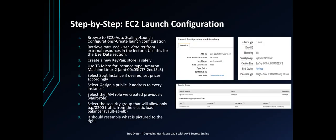Next we'll set up the launch configuration. Browse to EC2 Auto Scaling Launch Configurations and create a launch configuration. Retrieve the AWS EC2 user data text from the external resources provided in the lecture and use this for the user data section. This is essentially a bootstrap script which will launch Vault successfully every time. Create a new key pair if you haven't already, store it safely, and use that key for the key pair.